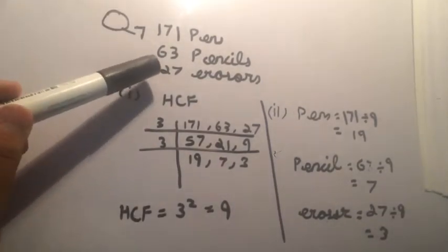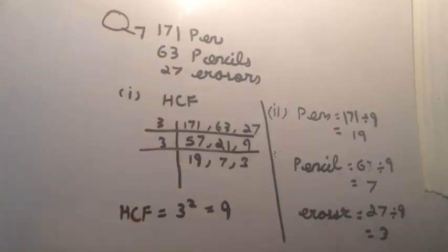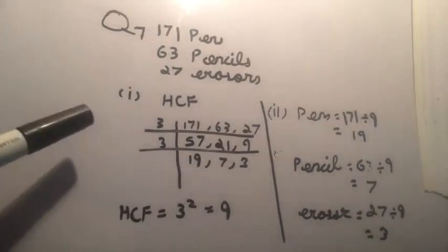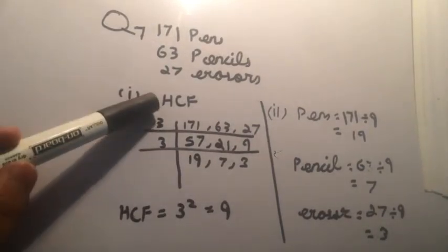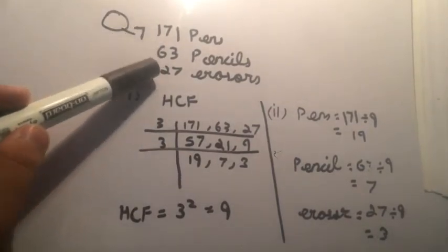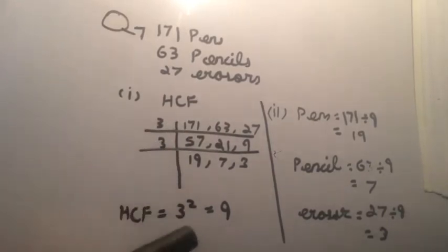The items should be equally distributed. Find the largest number of gift bags that can be packed. The largest number means HCF, so we find the HCF of these three numbers. The HCF is 9.